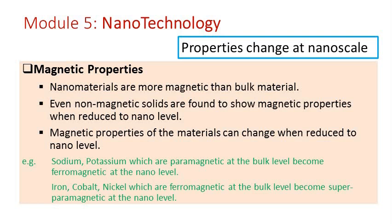There is also a change in magnetic properties. Nanomaterials are usually more magnetic than bulk materials, and even non-magnetic solids can show magnetic properties when reduced to the nanoscale. For example, potassium and sodium are paramagnetic at the bulk level but become ferromagnetic at the nano level. Iron, cobalt, and nickel, which are ferromagnetic in bulk, become super-paramagnetic at the nanoscale.